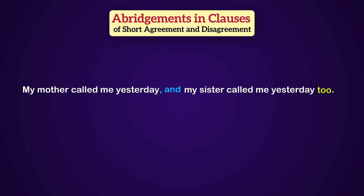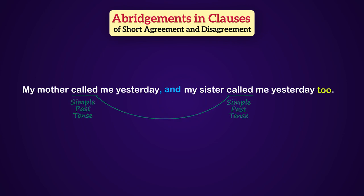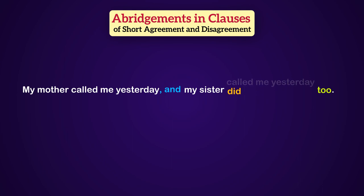Now it's time to change it into an abridged clause to show agreement. First, we have to know what the tense of the second clause is. It's simple past tense, which is parallel with the first clause. What is the auxiliary used for simple past tense? That's right — it is 'did.' We can replace the whole predicate with 'did.' So: My mother called me yesterday, and my sister did too.